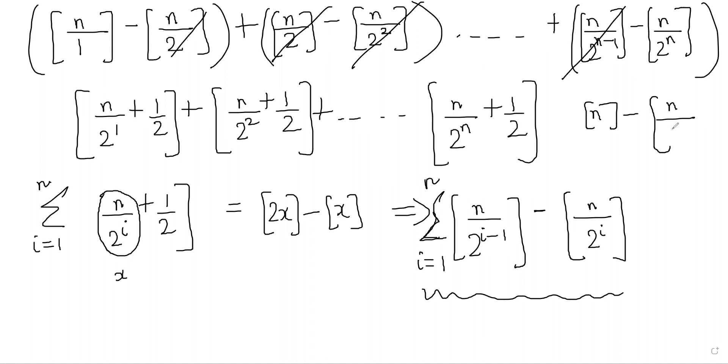Now obviously, for all positive n, n by 2 to the n will be less than 1.